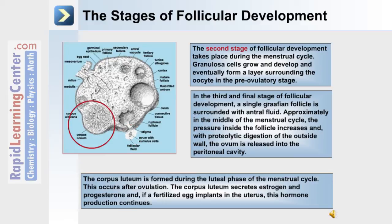The corpus luteum is formed during the luteal phase of the menstrual cycle. This occurs after ovulation. The corpus luteum secretes estrogen and progesterone, and if a fertilized egg implants in the uterus, this hormone production will continue.